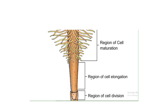In summary, the three regions of the root are: first, the meristematic zone — the growing tip where cells divide; second, the zone of elongation — where cells increase in length; and third, the zone of maturation — the differentiated region where root hairs form and water and minerals are absorbed.